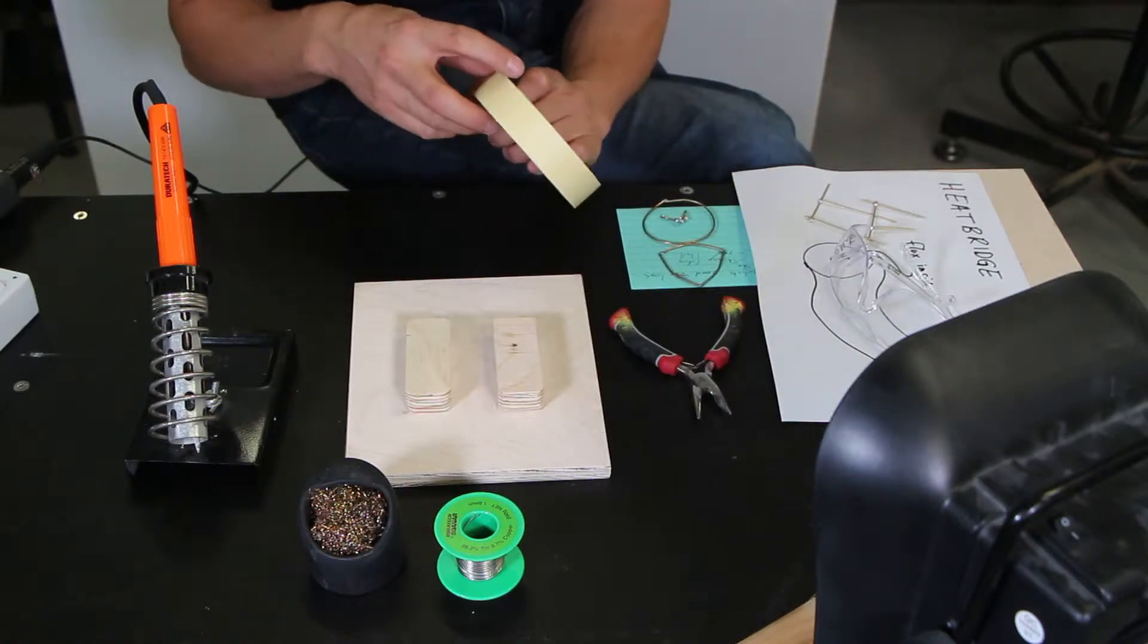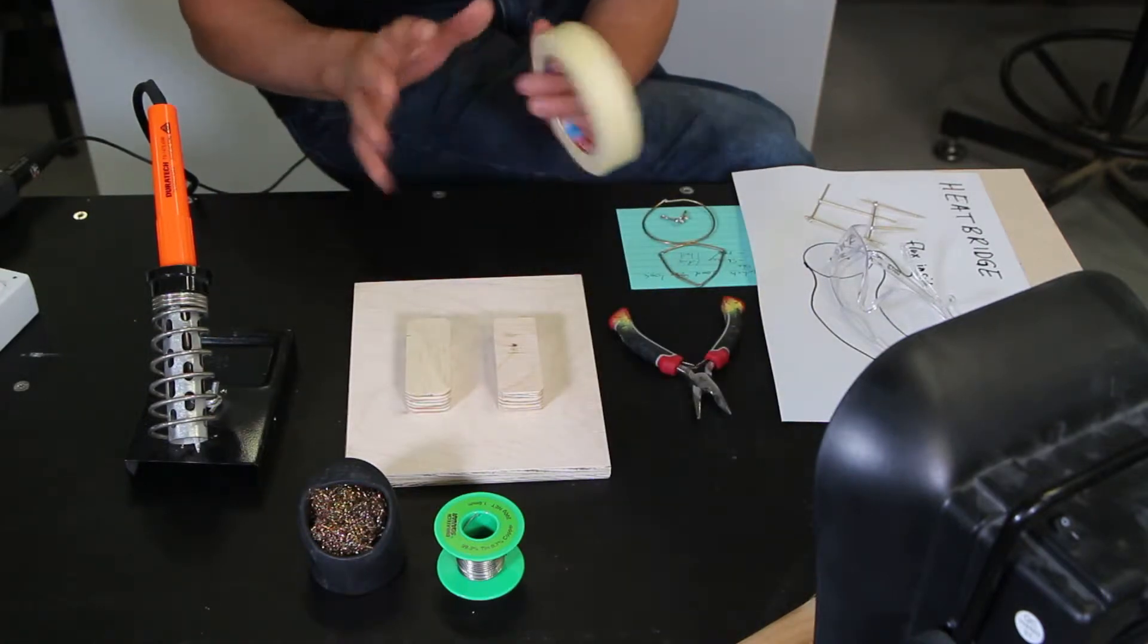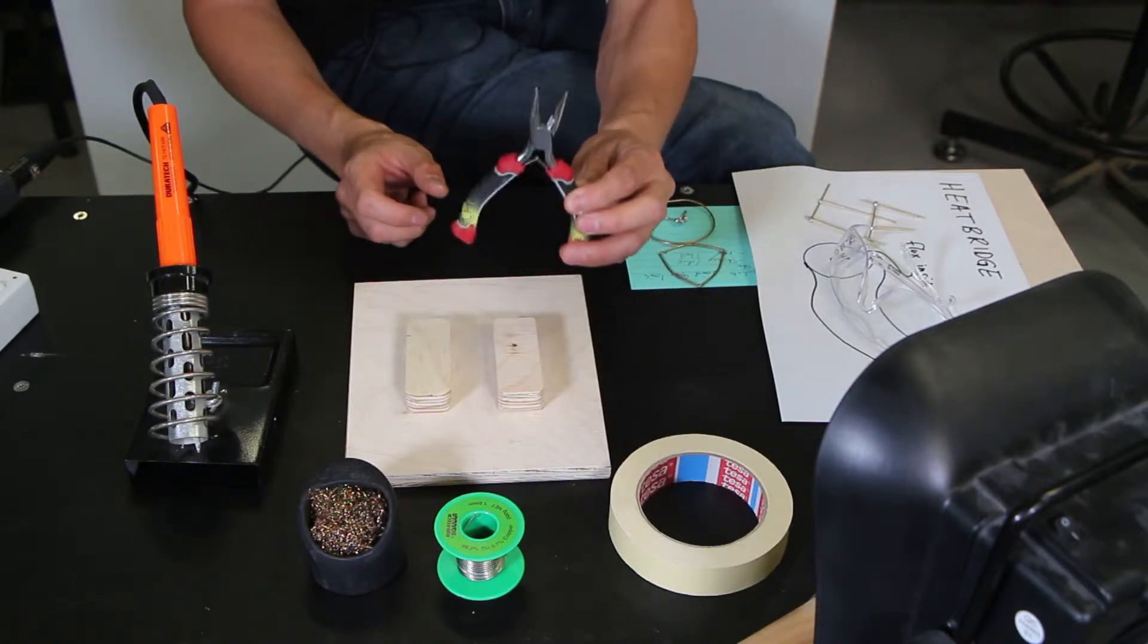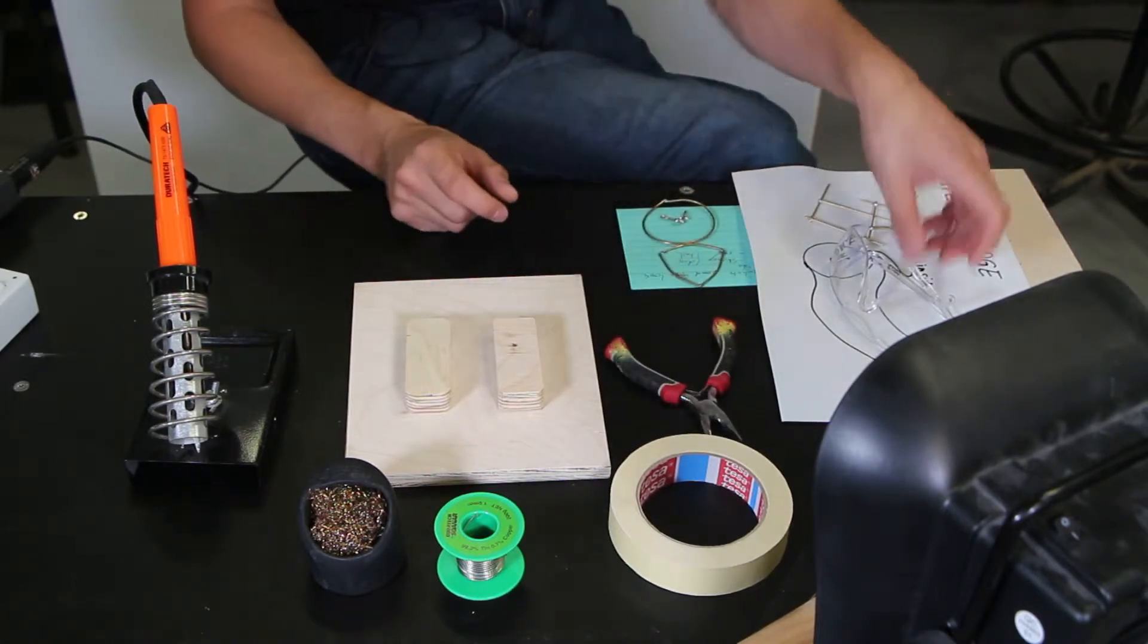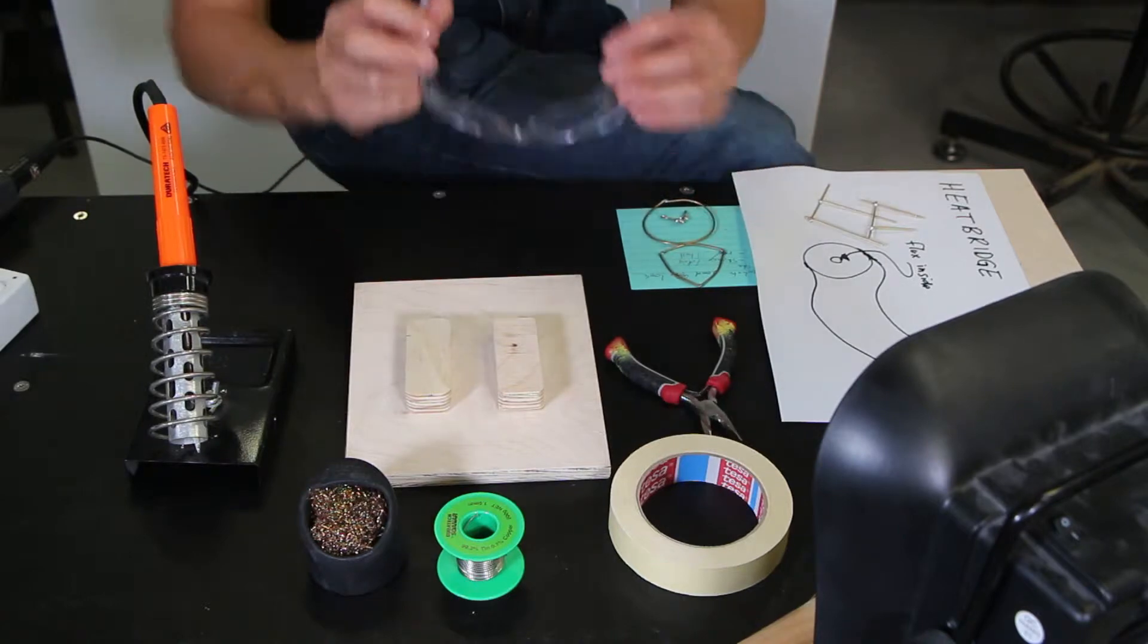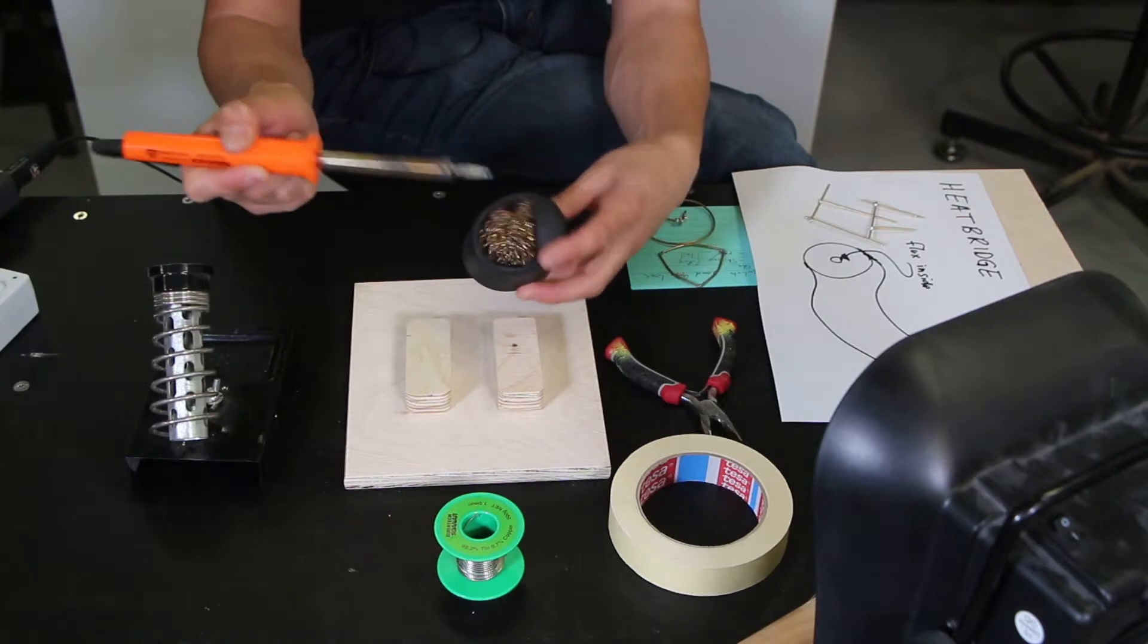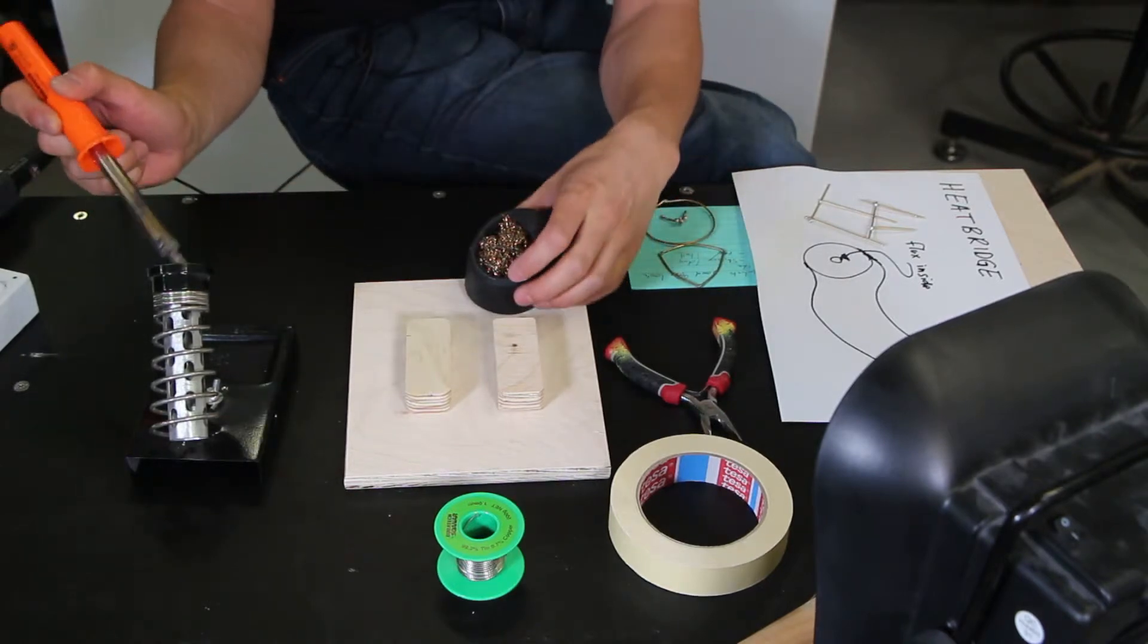If your kitchen has some coarse steel wool like that, it'll do the same job. We're going to be using some masking tape to hold our work so that it's less fiddly and we're not burning ourselves. Safety glasses are very important, especially if you're cleaning your tip.